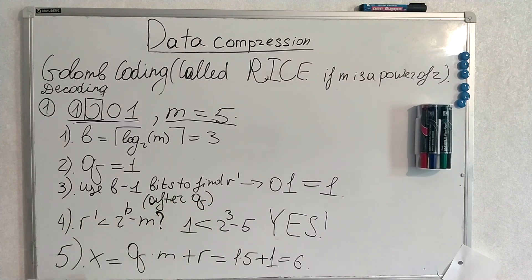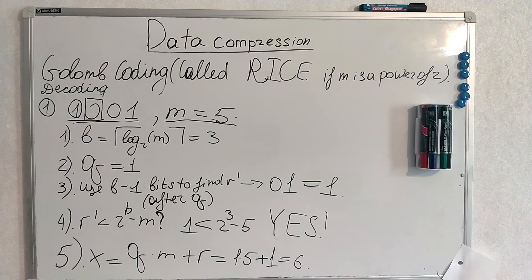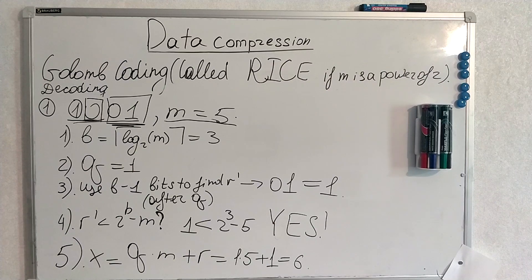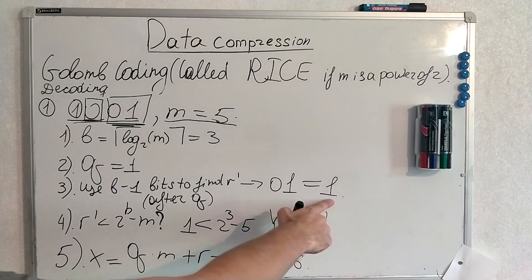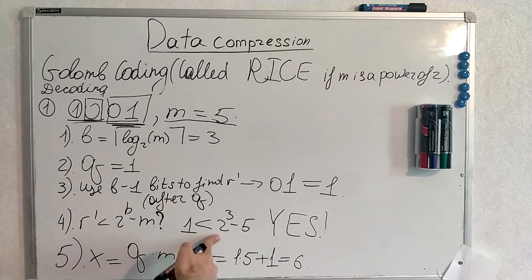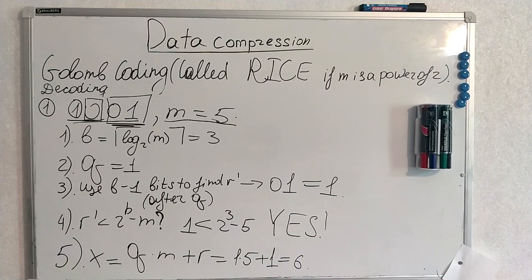Then we find r tilde. Of course we look at the sequence after q. We ignore the q. We look at the next bits to find r tilde. B was 3. So we use b minus 1 bits. And at the end we only have 3 minus 1 bits, 2 bits. We have no other option. And we actually decode r tilde. It is 1. We look at the equation. 1 is smaller than 2 to the power 3 minus 5. Is it true? Yes it's true. Thus we use r tilde as a reminder and use it in this formula. q is known from this step, m is known from the beginning, r is known from this step. And thus x is 6. You can check me if you want, or try to decode something on your own.